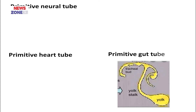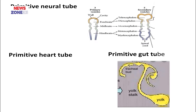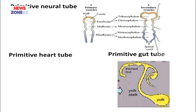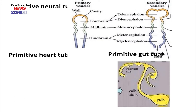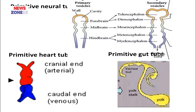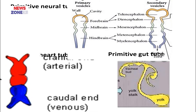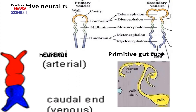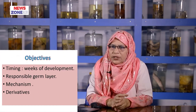Today there are three primitive tubes in human development. The slide shows all three. This is the neural tube, which is responsible for the formation of the central nervous system. This is the primitive heart tube, responsible for the development of the cardiovascular system. And these are the primitive gut tubes, responsible for the development of the gastrointestinal tract, respiratory system, and part of the urinary system.